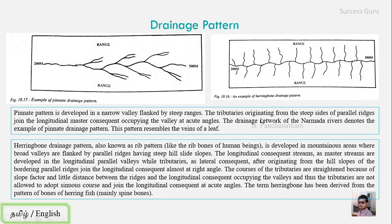In the herringbone pattern, there are steep ridges with a valley in between. The river runs straight along the valley, and because of the steep slope and short distance between the ridges and the main stream, the tributaries are not allowed to adopt a sinuous course, so they join the longitudinal consequent at approximately 90-degree or acute angles. This gives the overall appearance of the herringbone or rib structure.